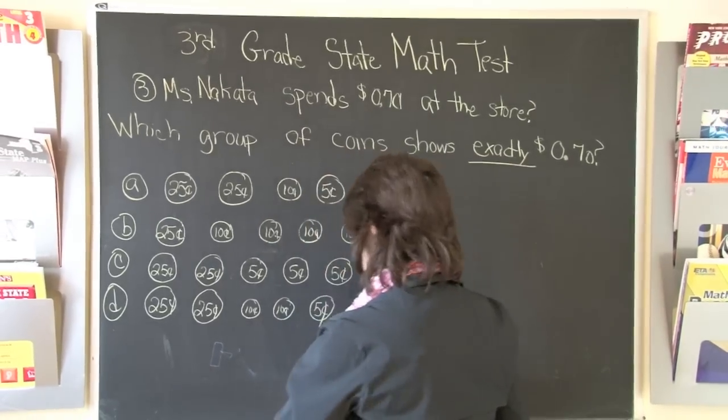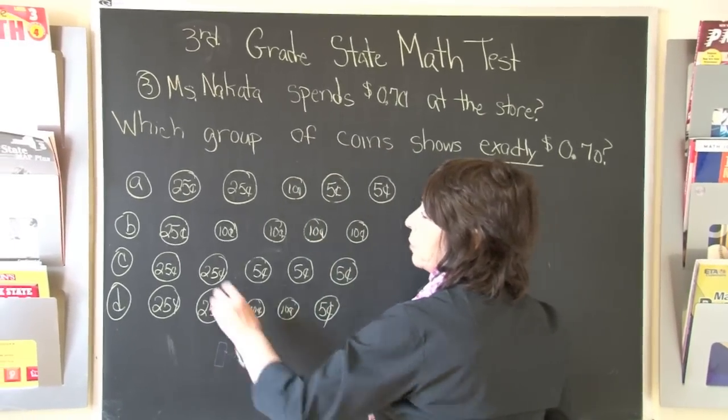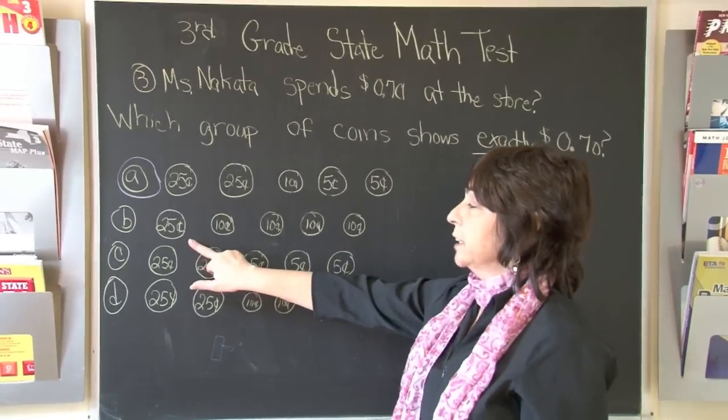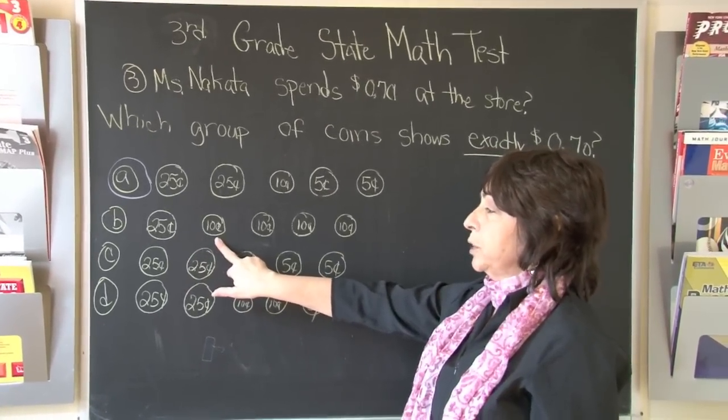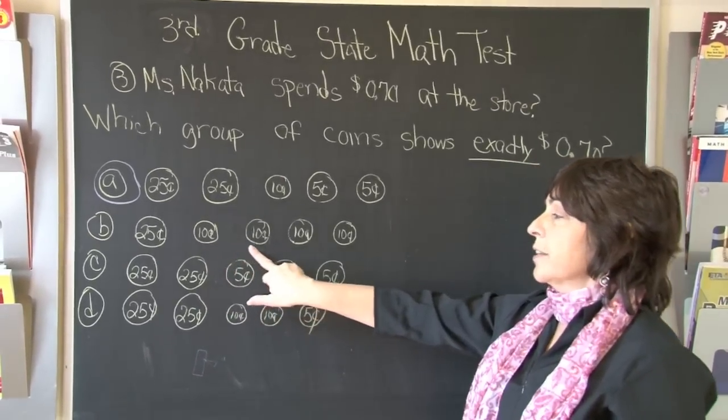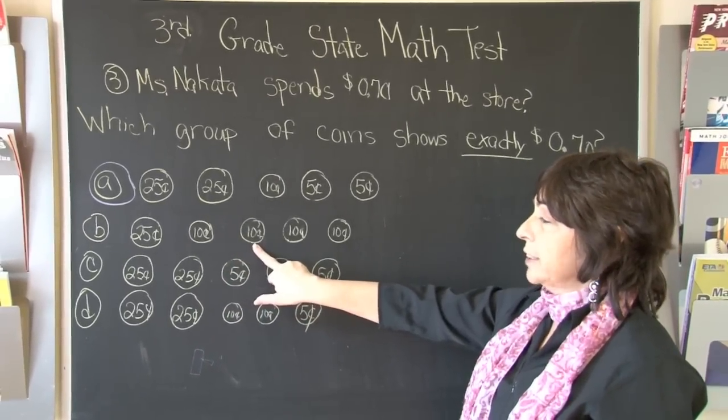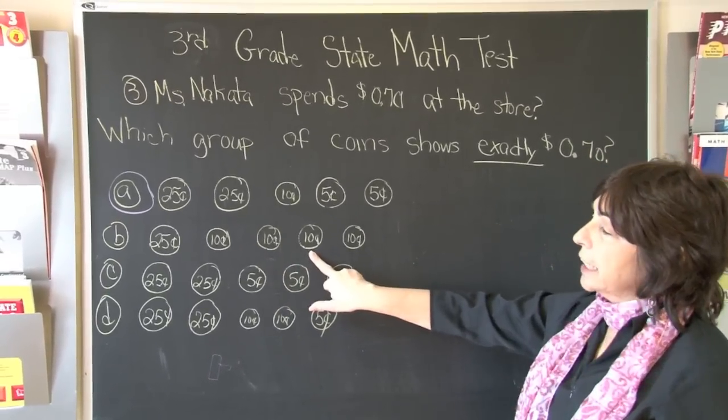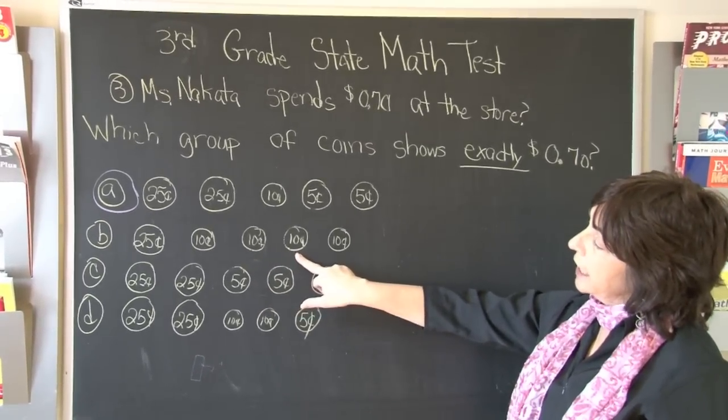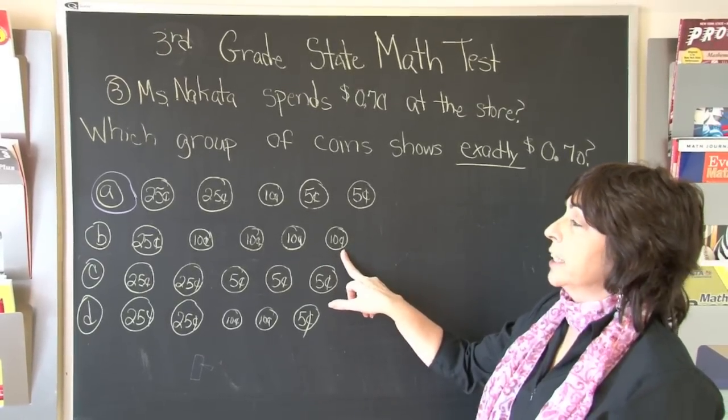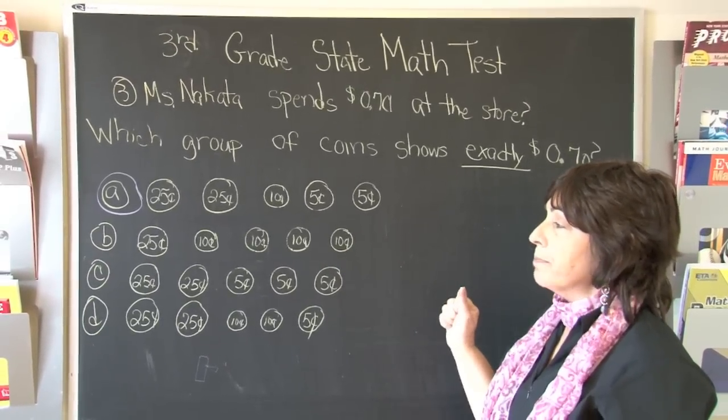But let's look at some other examples to see why it was not the answer. B was 25 cents plus 10. We should all know that 25 plus 10 is 35 cents. Plus another 10, 45 cents. Plus another 10 cents, 55 cents. And another 10 cents is 65 cents, which is 5 cents too little. So it cannot be B.